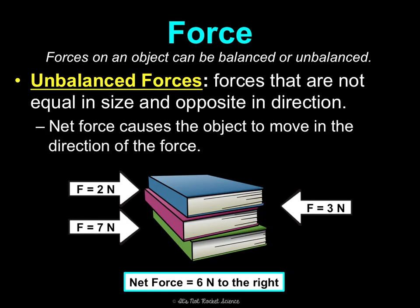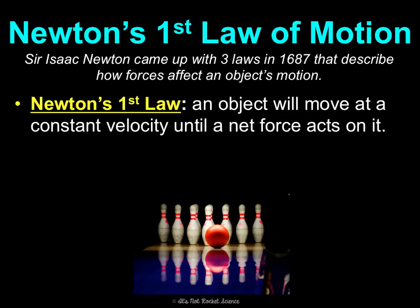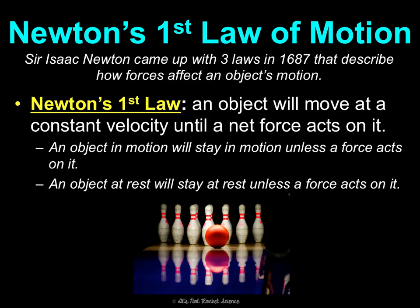Throughout these notes we're going to cover Sir Isaac Newton's three laws of motion, which he came up with in 1687, that talk about how forces affect an object's motion. Newton's first law says an object will move at a constant velocity until a net force acts on it. An object in motion will stay in motion unless a force acts on it, and an object at rest will stay at rest unless a force acts on it. For example, bowling pins stay at rest until the bowling ball acts on them, and the bowling ball continues in motion until friction or the pins stop it.